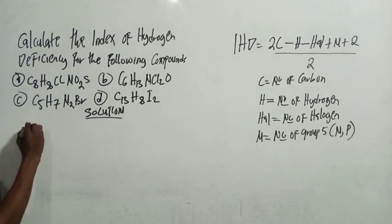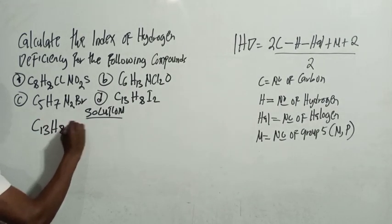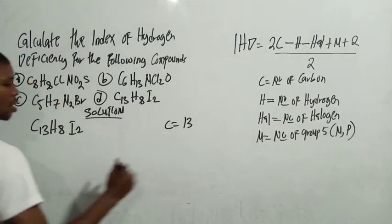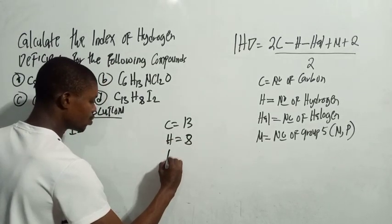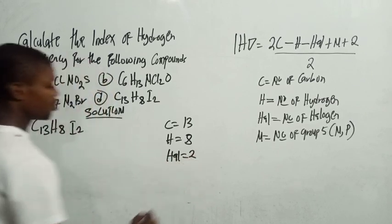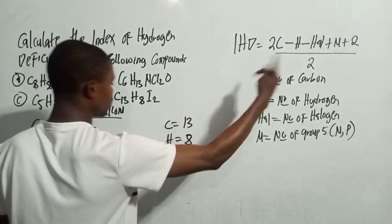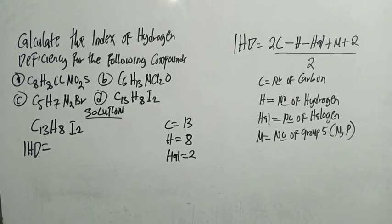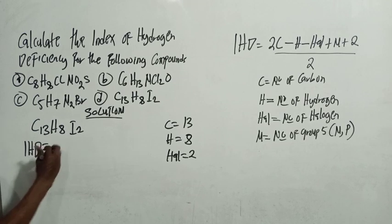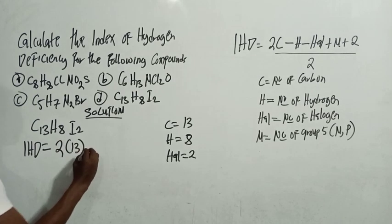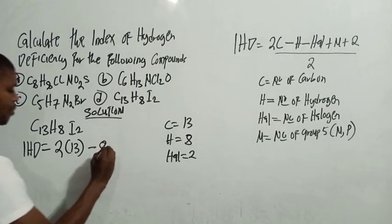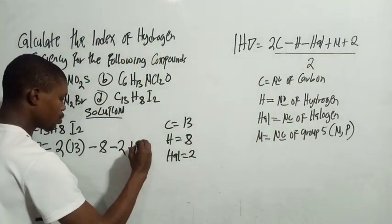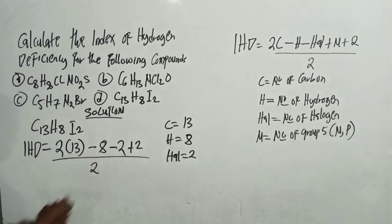The fourth example is C13H8I2. Carbon is 13, hydrogen is 8, and the halogens (iodine × 2) give a halogen count of 2. There is no group five element, so we ignore N. Applying the formula: IHD = (2 × 13) minus 8, minus 2, plus 2, over 2.